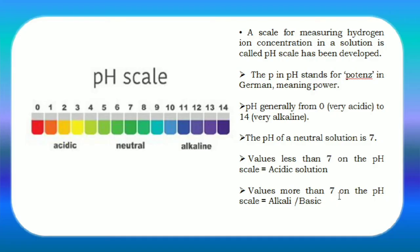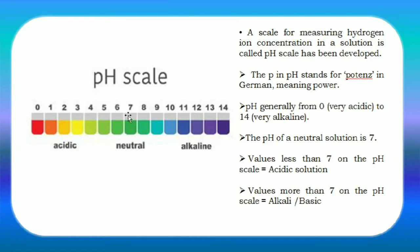In the last class we learnt about the pH scale. The pH scale is the measure of how acidic or basic water is, and the range goes from 0 to 14. 'P' stands for potence, meaning power, and 'H' stands for hydrogen. So pH generally ranges from 0 to 14: 0 being very acidic and 14 being very alkaline. From 0 to 7 the solution is acidic, if it is 7 it is neutral, and from 7 to 14 it is called alkaline or basic.